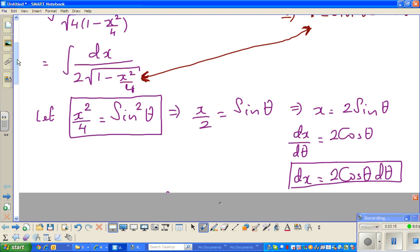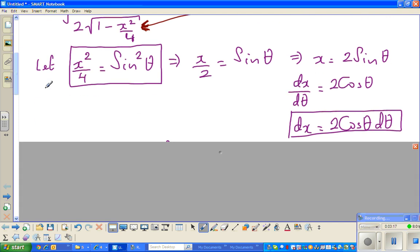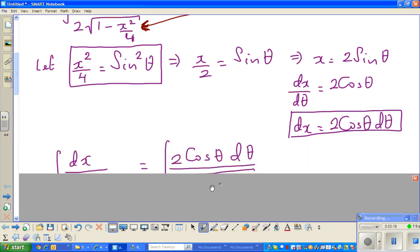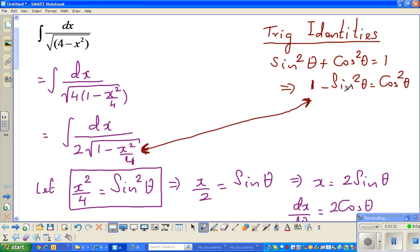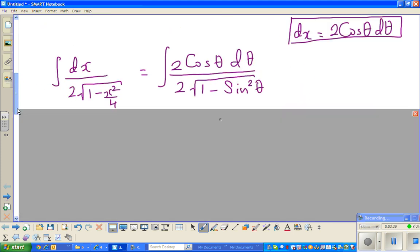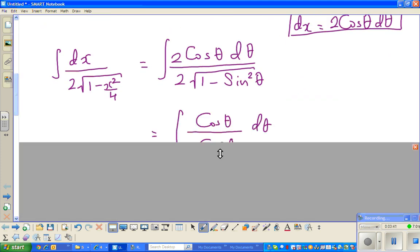From an x form, now it will become a trig form. That has changed to 1 over 2. This thing has changed to 2 cos theta dθ over square root of 1 minus sine squared theta. Now what do we know about 1 minus sine squared theta? It's cos squared theta.